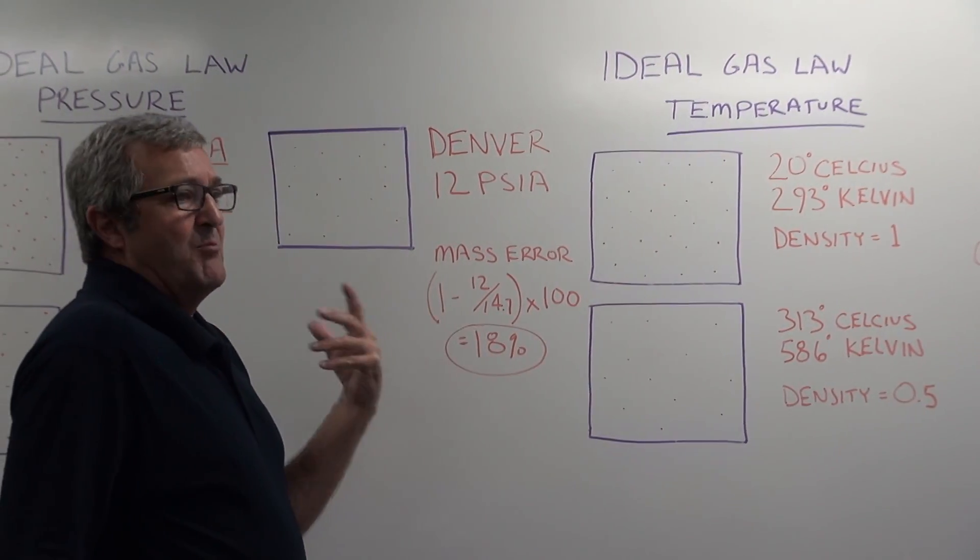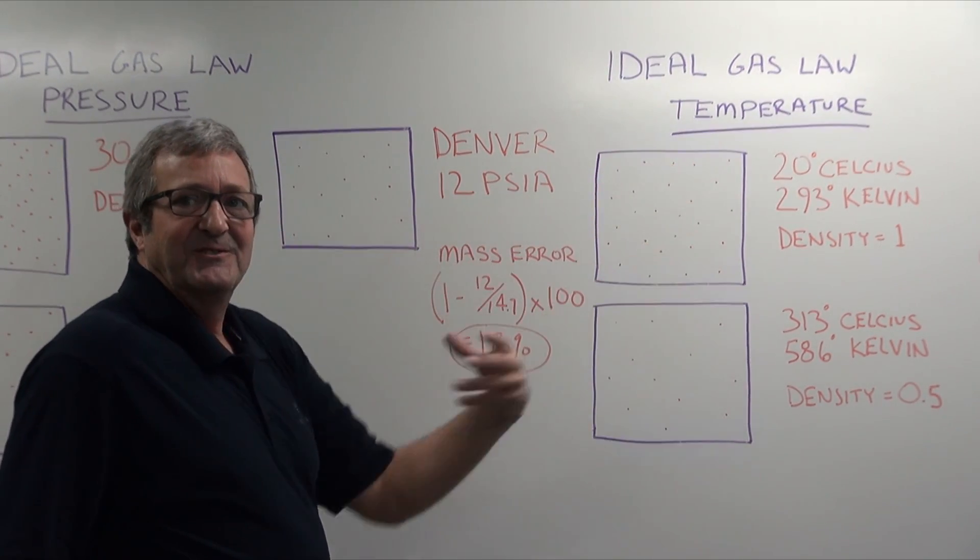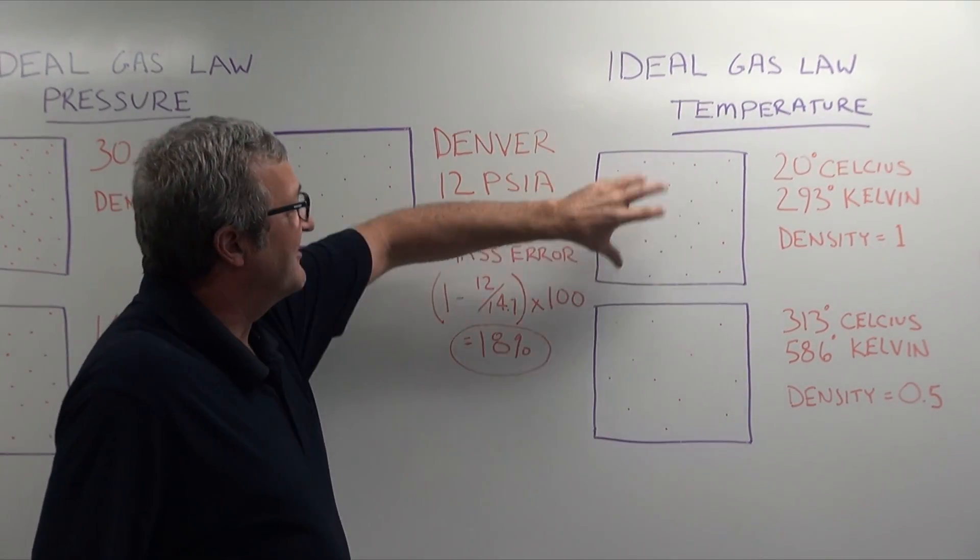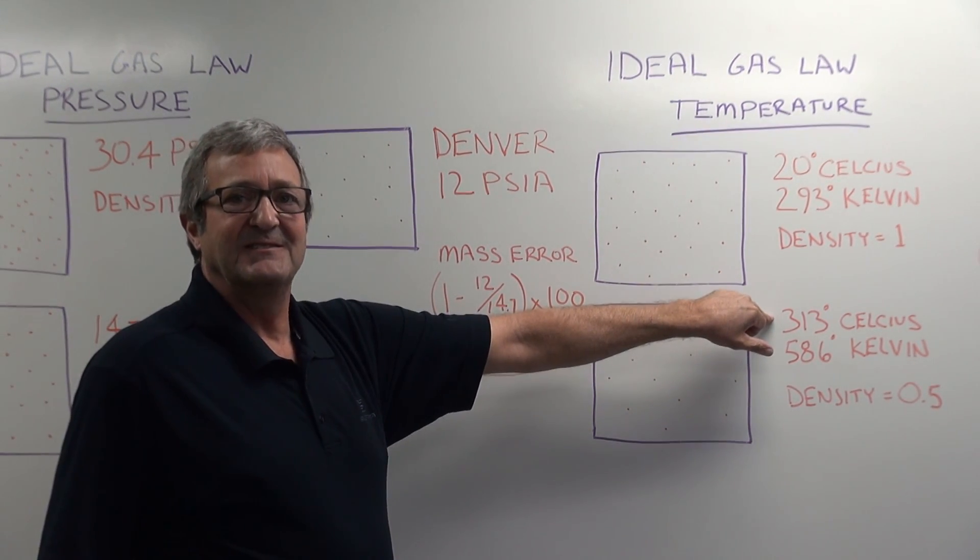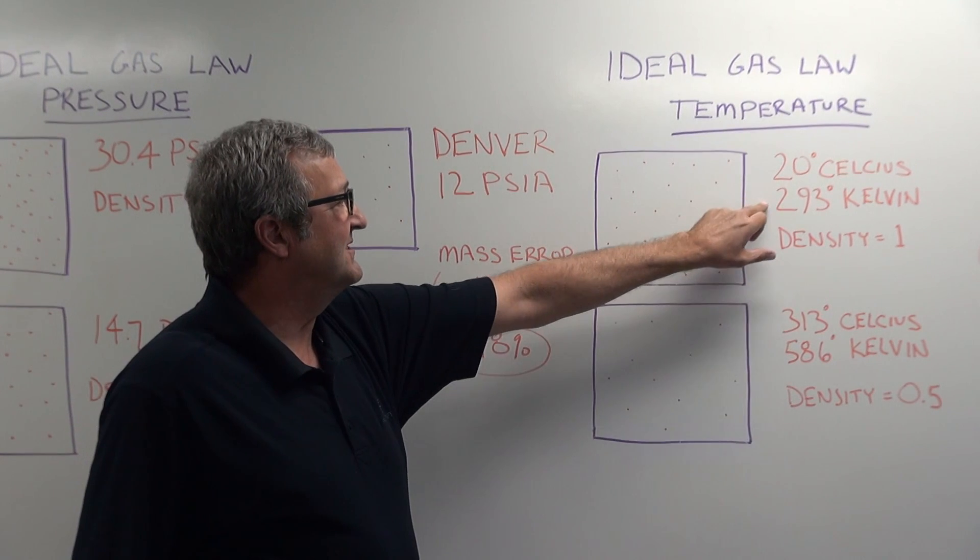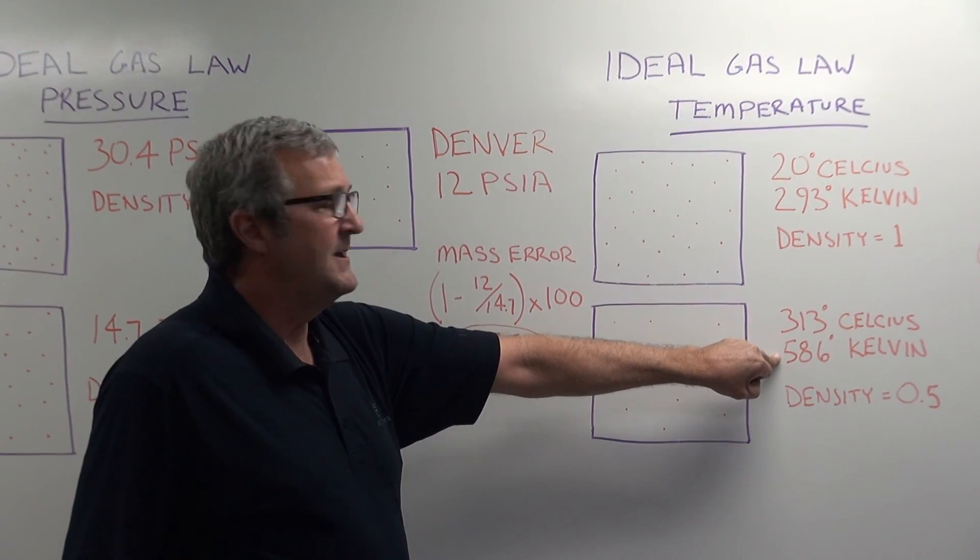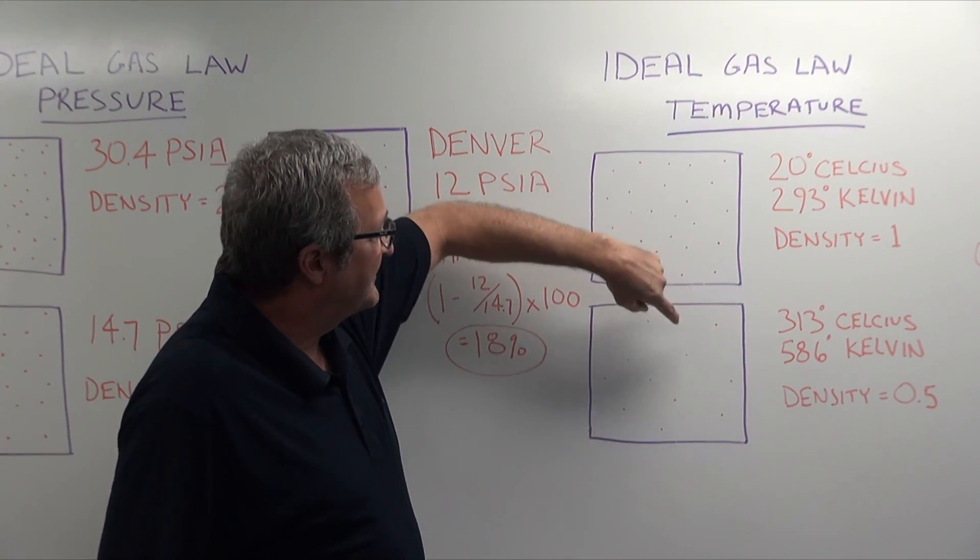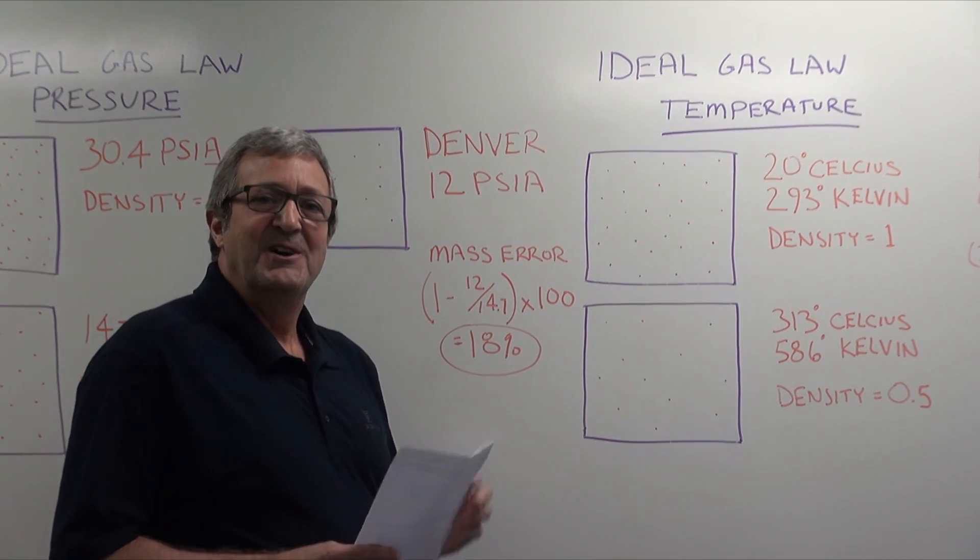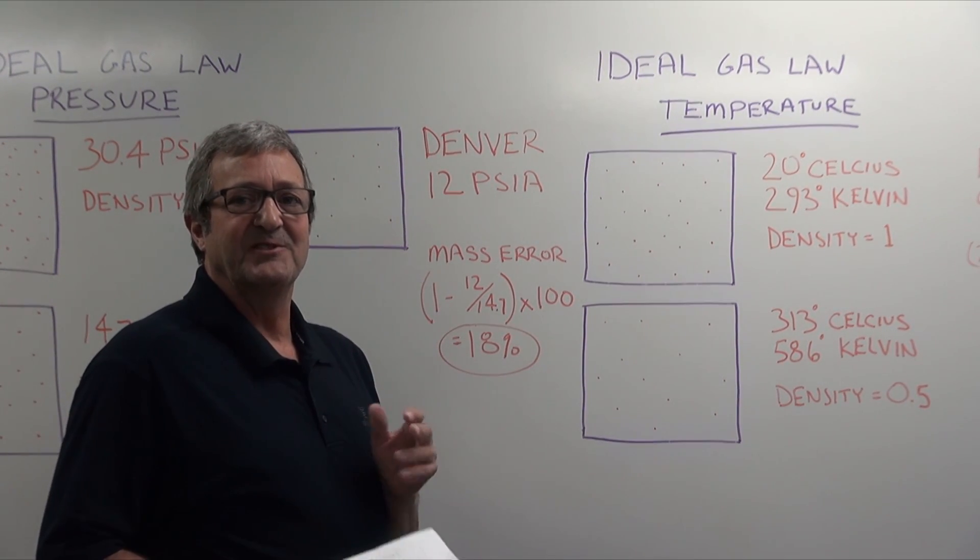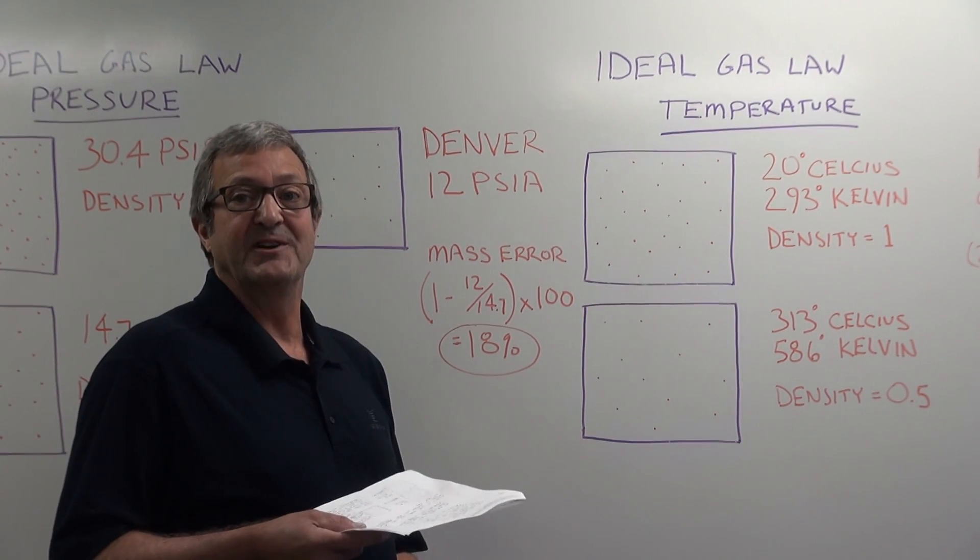So we're back to that model where we're trying to show you visually that in the atmosphere that's common for us all to live in, you would have this many molecules. But if the temperature, in this case we're going to double the temperature again, absolute temperatures double, you see the 293 Kelvin became 586 degrees Kelvin. What the ideal gas law says is that when that happens your density is halved, so the pressure and temperature relationships are inverted. A higher pressure creates higher density, whereas a higher temperature creates lower density.